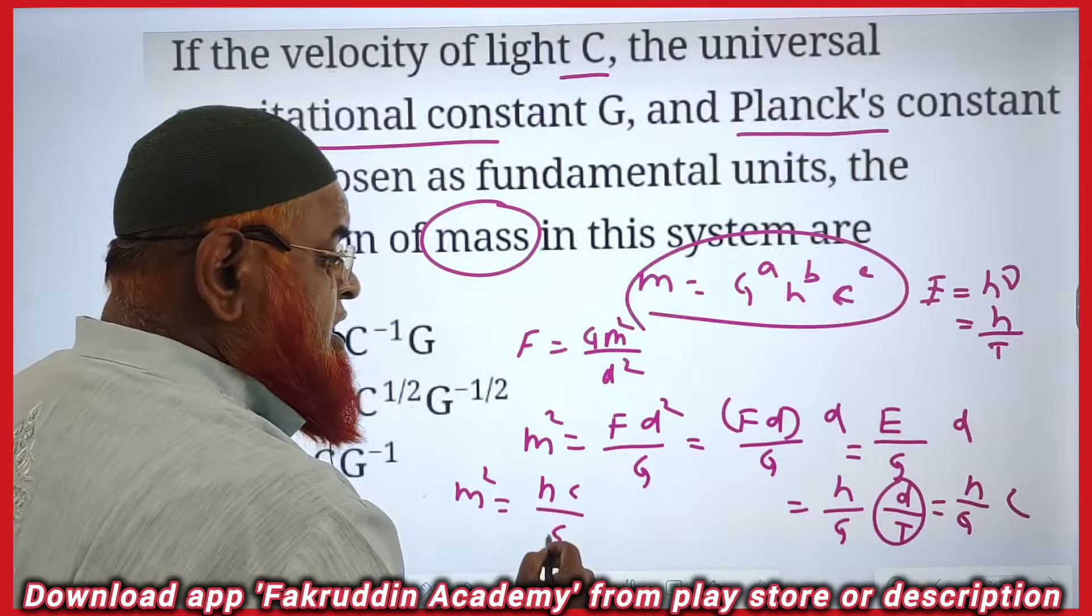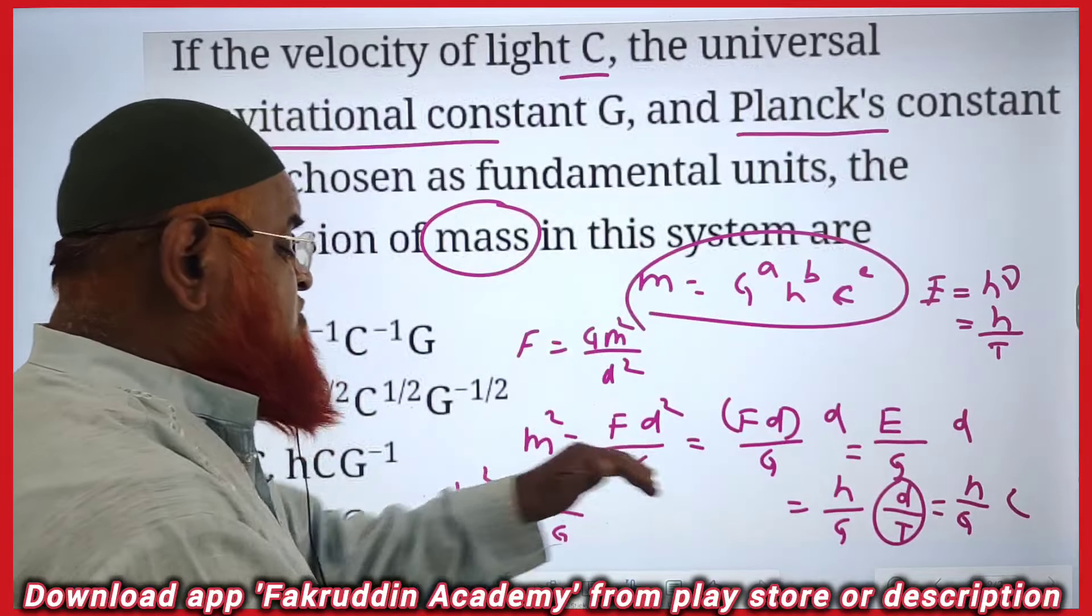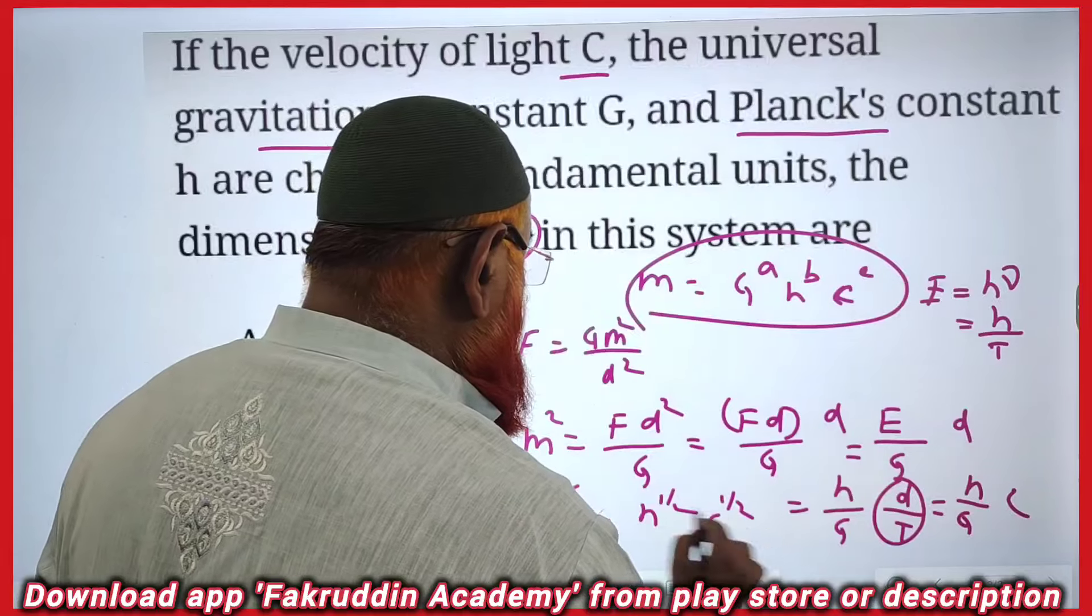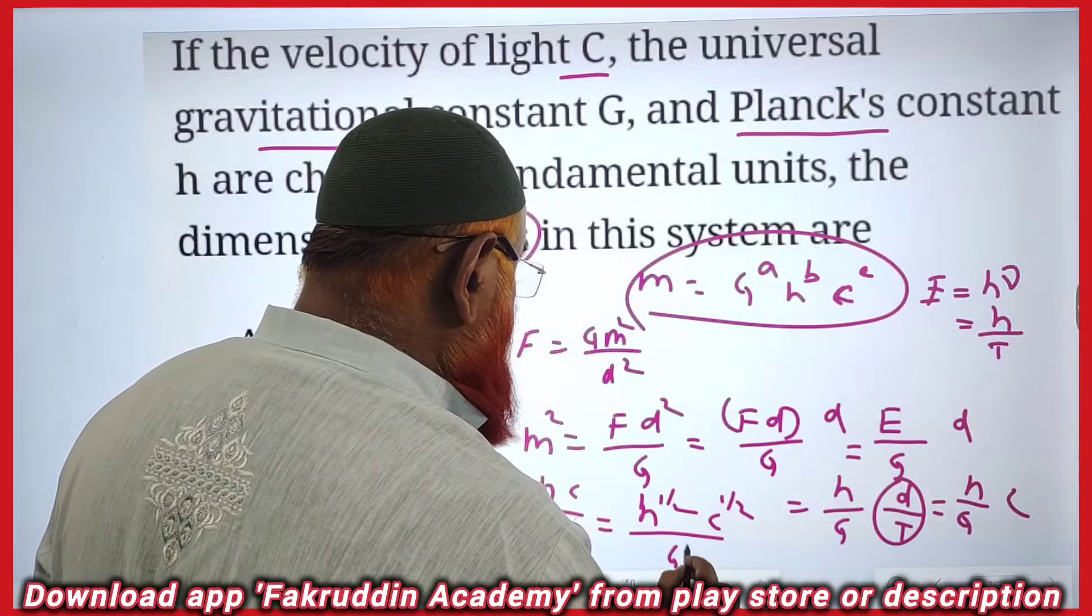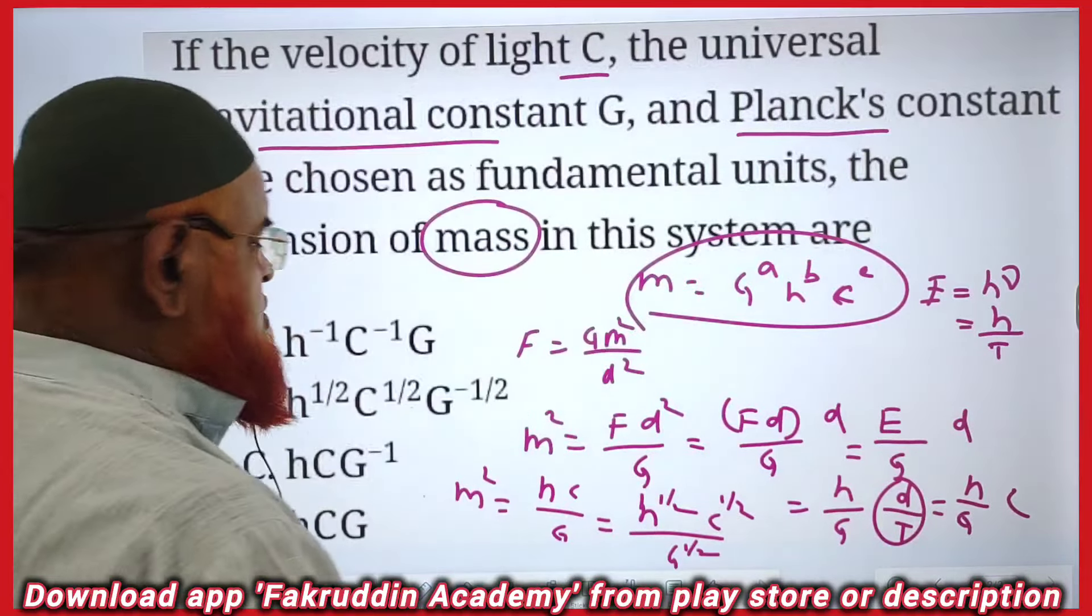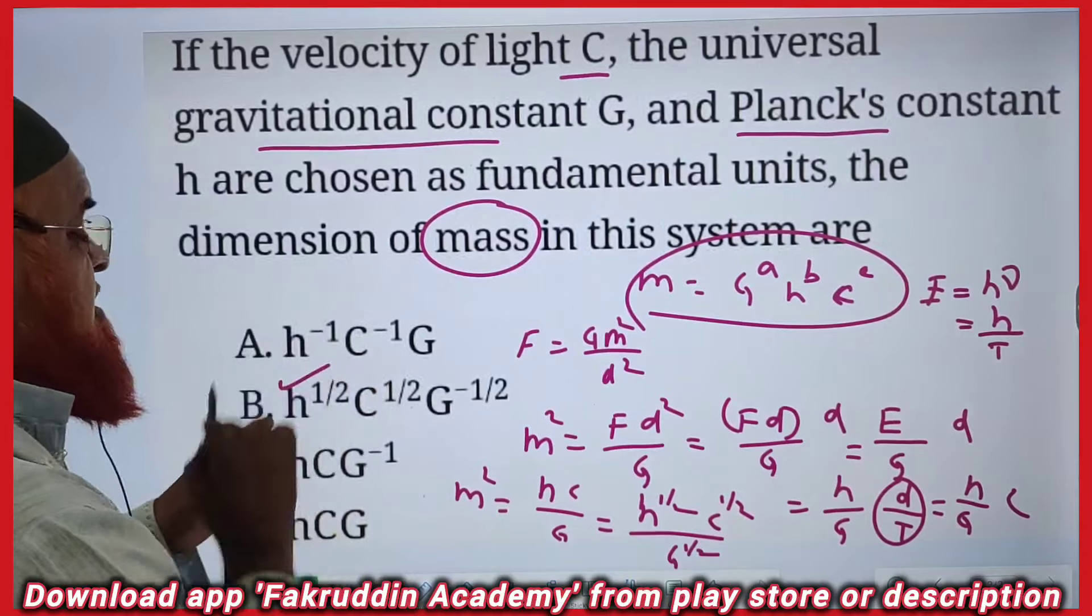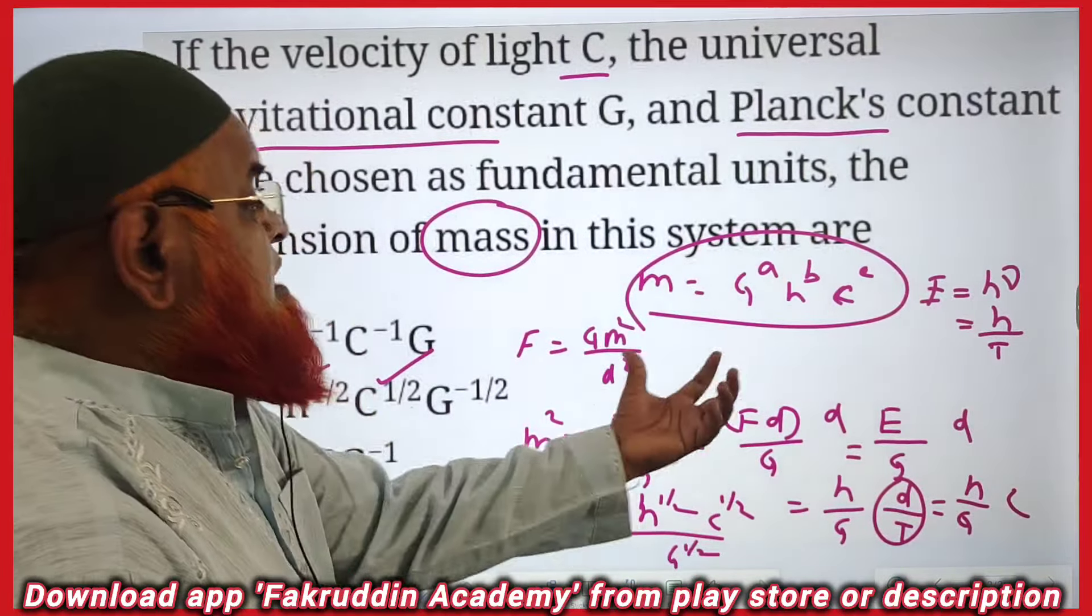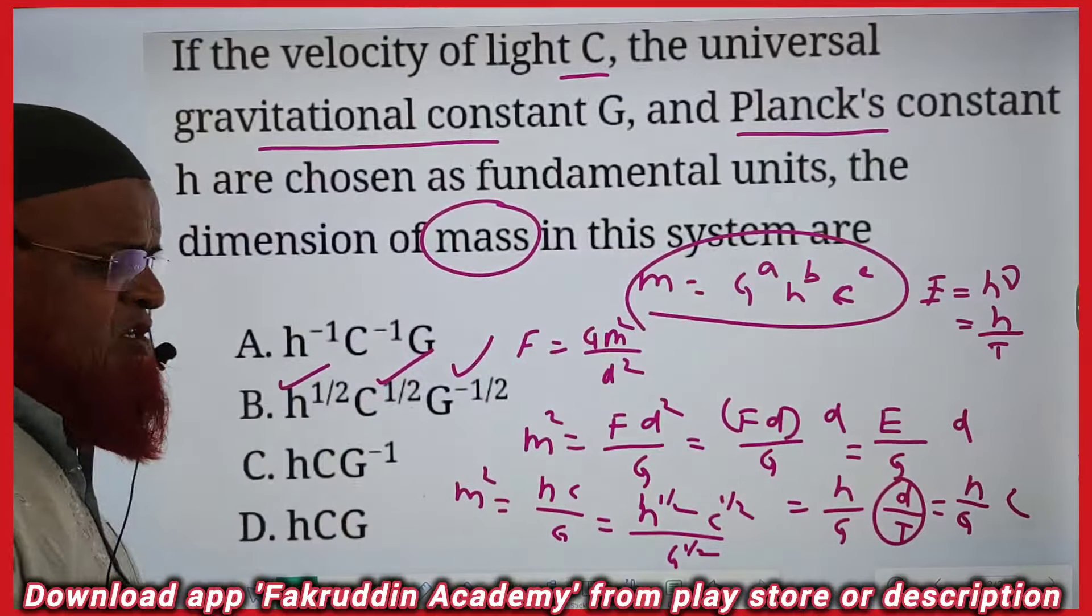it is understood that m square is equal to hc by G. Square if you take, hc by G, square if you send that side, you will get h power 1 by 2 and c power 1 by 2 and divide by G power 1 by 2. So your answer is h power 1 by 2 and c power 1 by 2. G comes to numerator becomes G power minus 1 by 2.